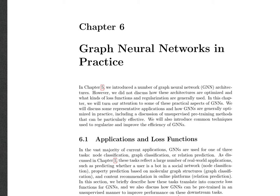We have reached Chapter 6 of the book, in which we're going to talk about graph neural networks in practice — what kinds of applications they have, and what kinds of optimization approaches are there to assist us in training these networks. This chapter is going to cover the practical aspects of graph neural networks, the training of these networks in practice, and the discussion of unsupervised pre-training.